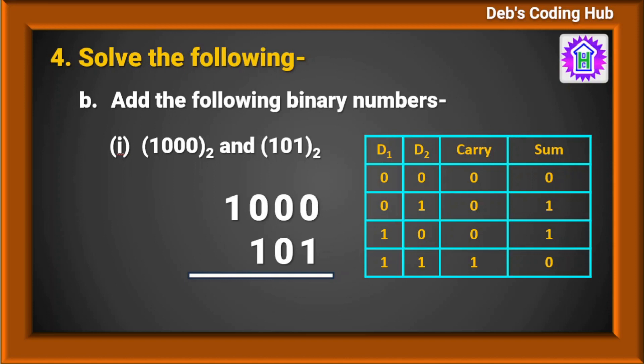Performing the addition: 0 plus 1 is 1, 0 plus 1 is 1, 0 plus 1 is 1, and the leading 1 remains. The result is 1101, which is 8 plus 5 equals 13.